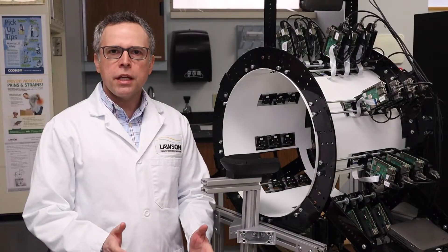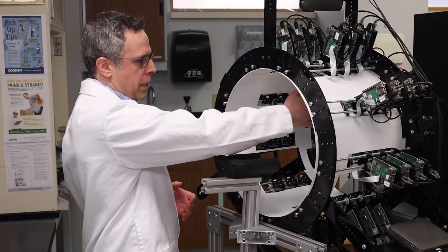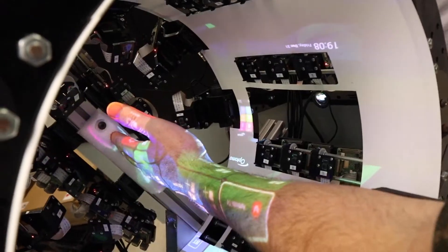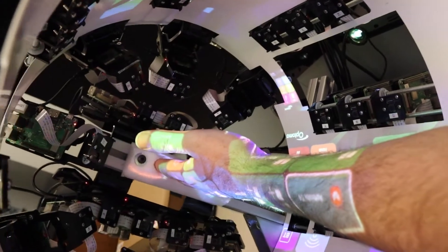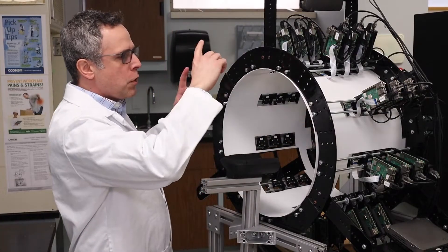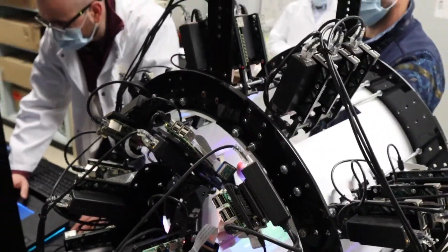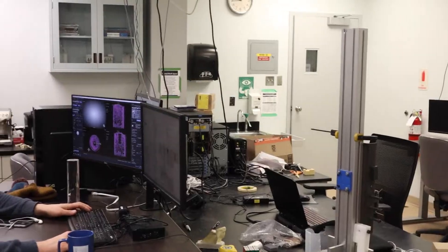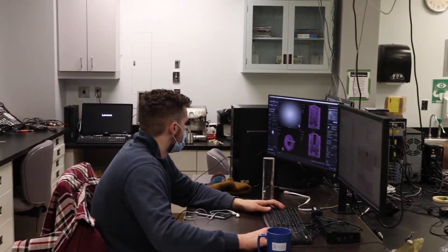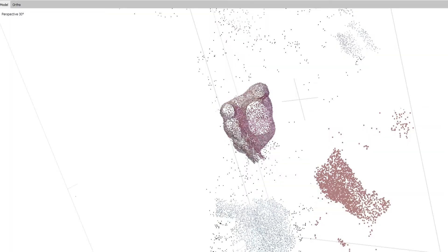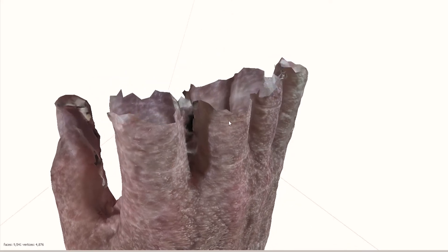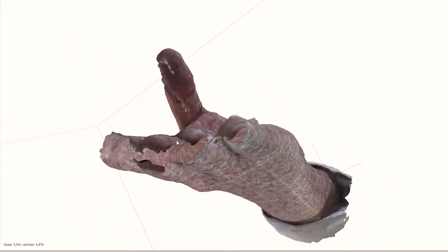The process begins with this 3D scanner. We ask the patient to place their arm inside the scanner like this, and the 42 cameras around the scanner take instant snapshots of the patient's arm. From that, we use a process called photogrammetry, which stitches together all those 42 images into a three-dimensional model of the patient's arm.